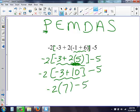Multiplication comes before subtraction. So negative 2 times 7 gives me negative 14. And then I bring down my minus 5.